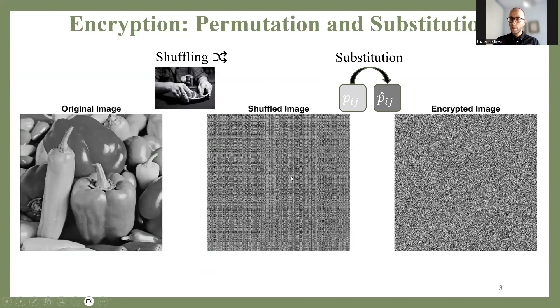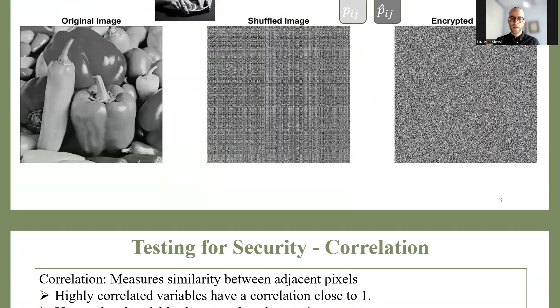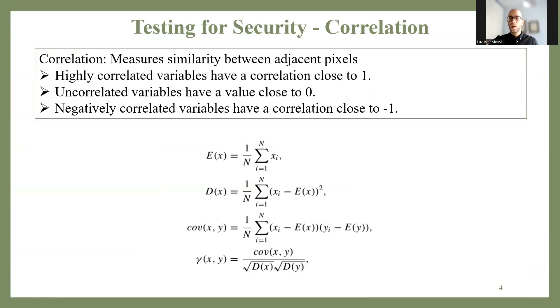After we perform chaotic encryption, we have a series of statistical tests to test the image. One of the most important ones is pixel correlation.